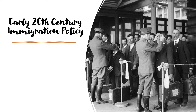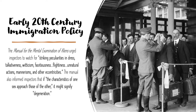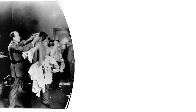Interestingly, among the various things immigration inspectors were asked to look for when examining potential migrants were "oddity of dress" and "unusual decoration worn on the clothing." Going beyond this, in the United States Public Health Service's Manual for the Mental Examination of Aliens, inspectors were urged to watch for "striking peculiarities in dress, talkativeness, witticism, facetiousness, flightiness, unnatural actions, mannerisms, and other eccentricities." The manual also informed inspectors that "if the characteristics of one sex approach those of the other, it might signify degeneration." As this suggests, gender nonconformity and sexual perversion were among those things that the U.S. government was interested in detecting among potential immigrants.